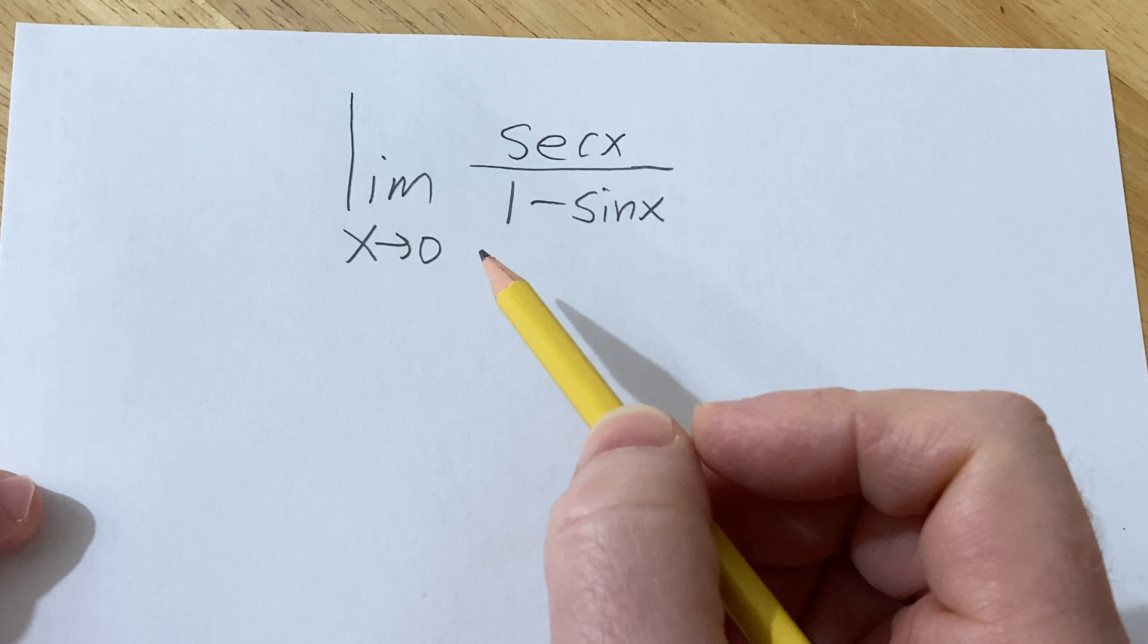So this is really one over cosine of zero, put this in parentheses so there's no confusion, over one minus sine of zero.